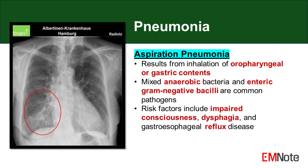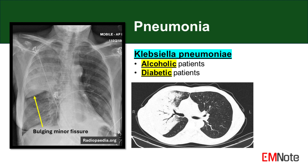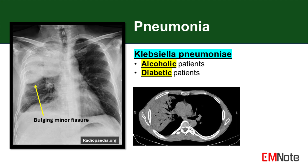Certain patient populations are at increased risk for specific pathogens. Alcoholic and diabetic patients are particularly susceptible to infections caused by Klebsiella pneumoniae. This gram-negative organism can cause severe necrotizing pneumonia, often characterized by the production of thick blood-tinged sputum described as 'currant jelly' sputum.